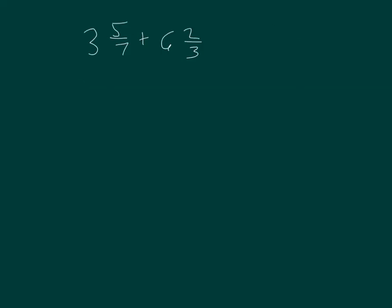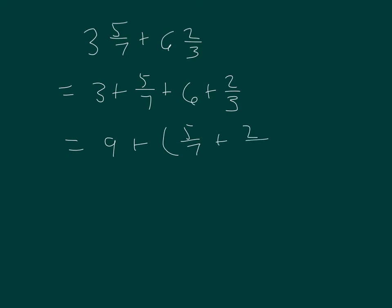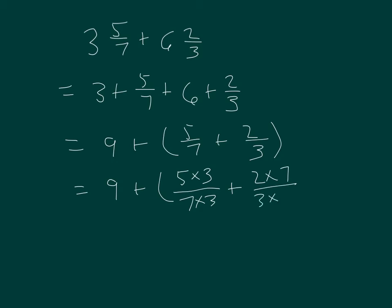Here I'm adding 3 and 5 sevenths plus 6 and 2 thirds, which equals 3 plus 5 sevenths plus 6 plus 2 thirds. I have to rename these so I have like units. The common denominator is 21sts: 5 sevenths becomes 15 twenty-firsts, and 2 thirds becomes 14 twenty-firsts. That gives us 9 plus 15 twenty-firsts plus 14 twenty-firsts, which equals 9 plus 29 twenty-firsts.